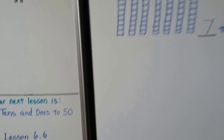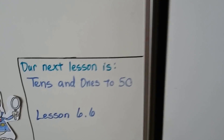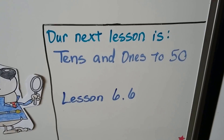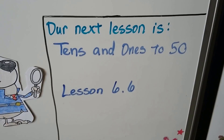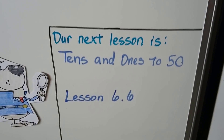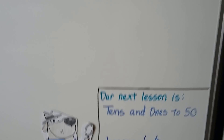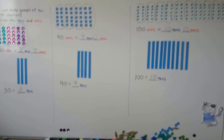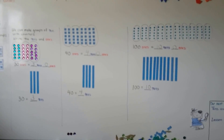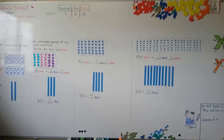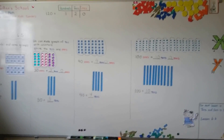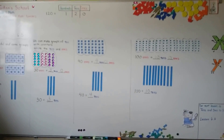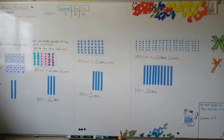We're going to keep learning about tens and ones. We're going to do tens and ones to fifty in the next lesson — that's lesson 6.6. Practice counting by tens, and you can start from any number — we learned that in the other video. Can you count to one hundred? I'll see you next time. Bye.